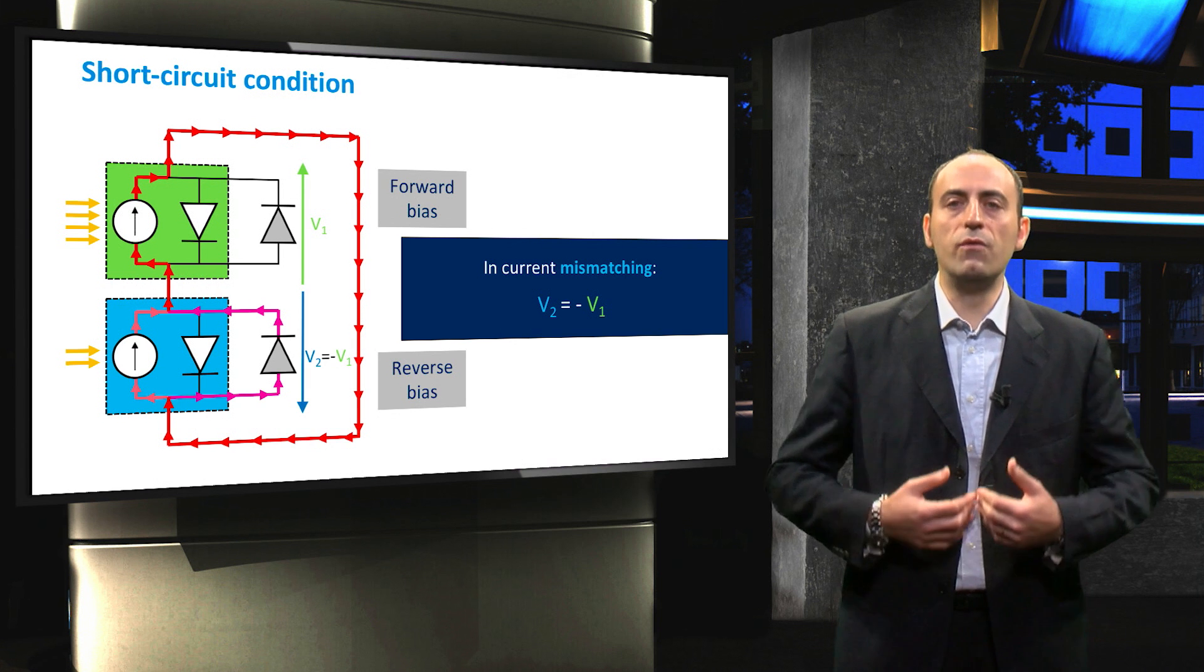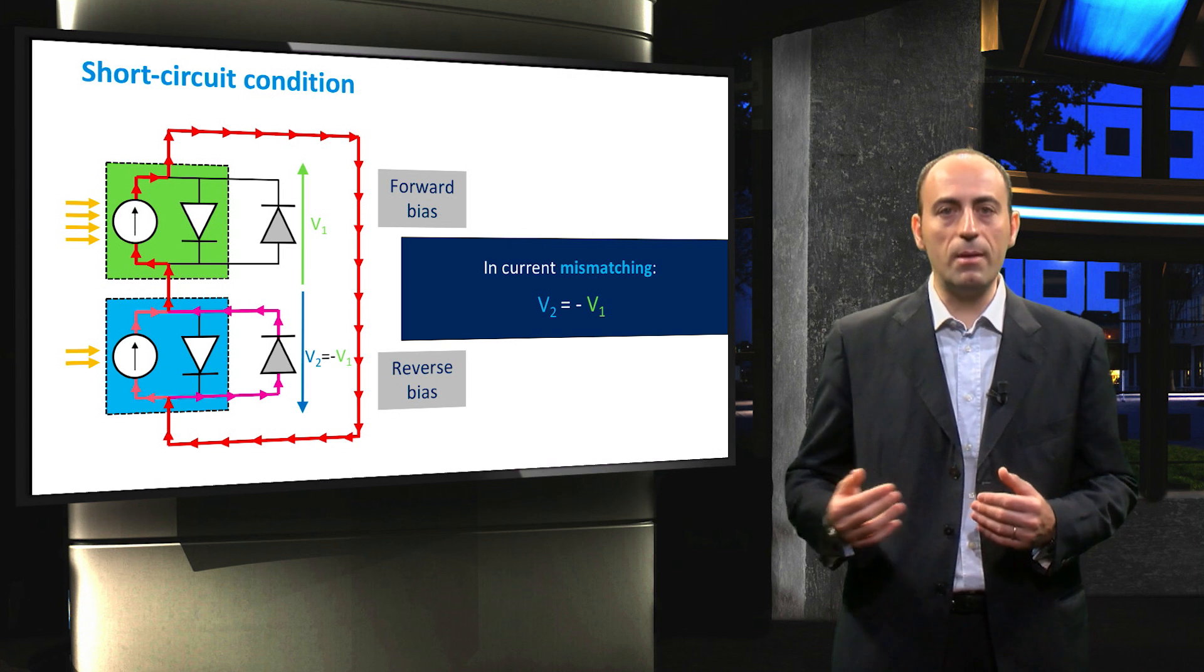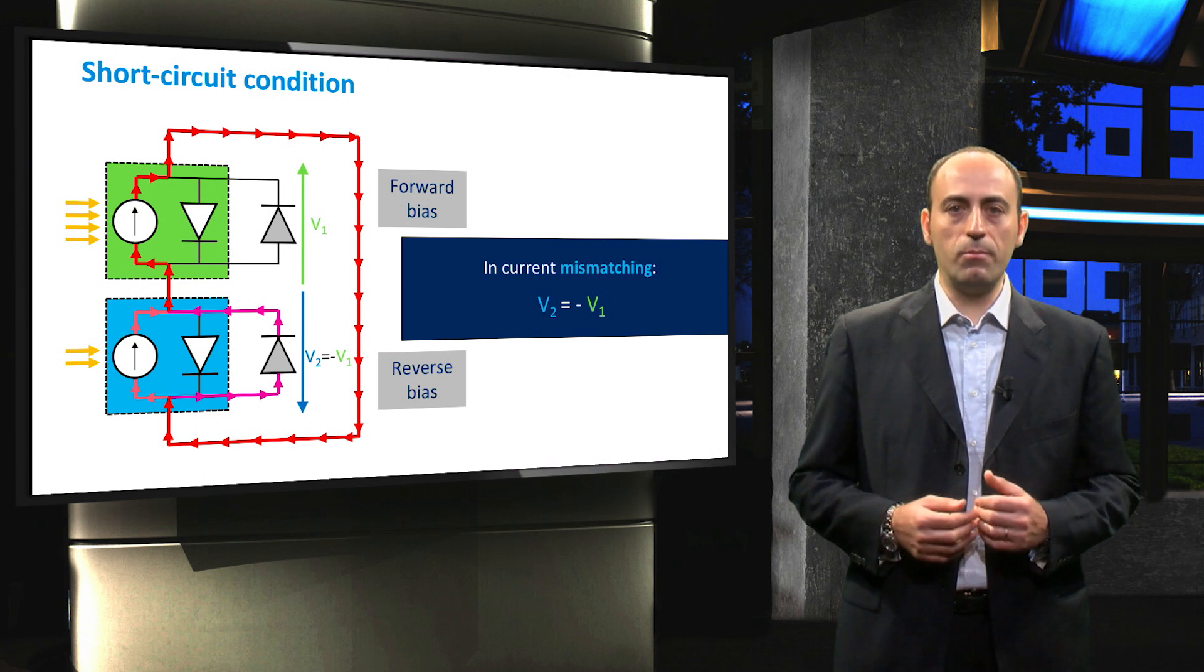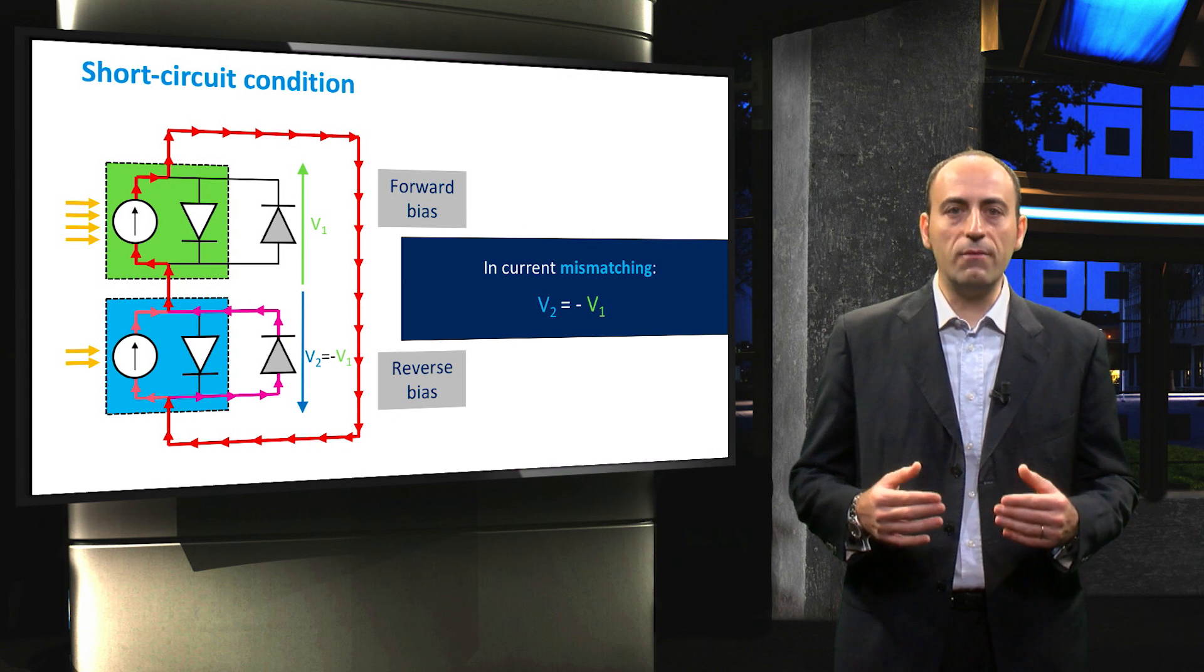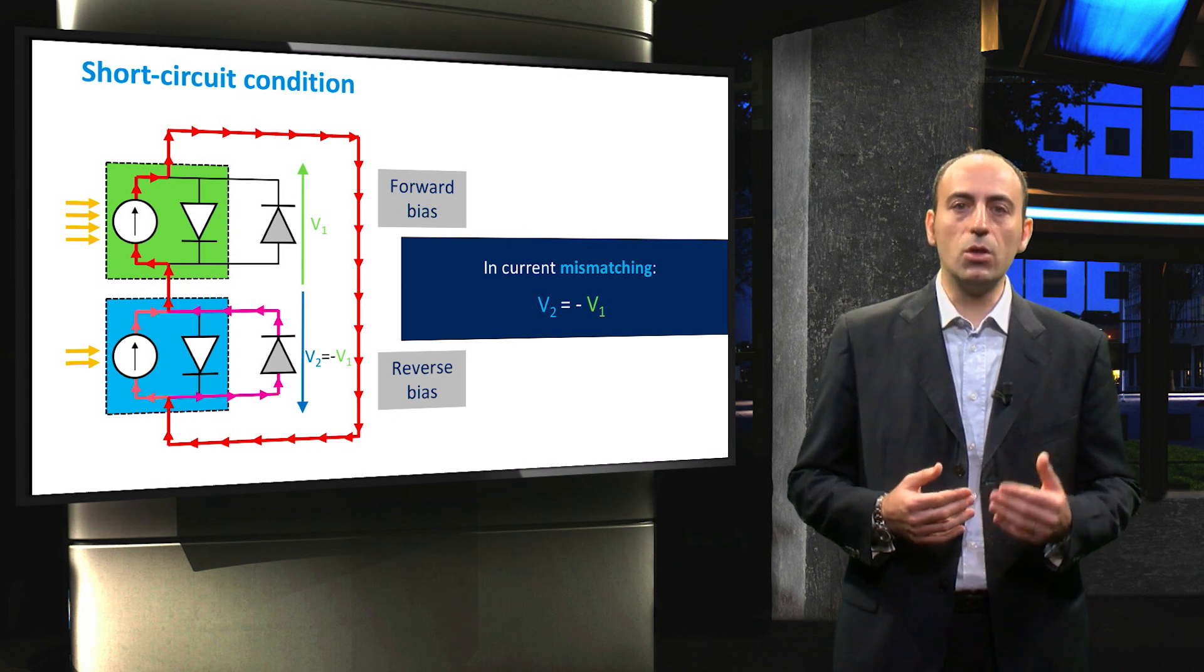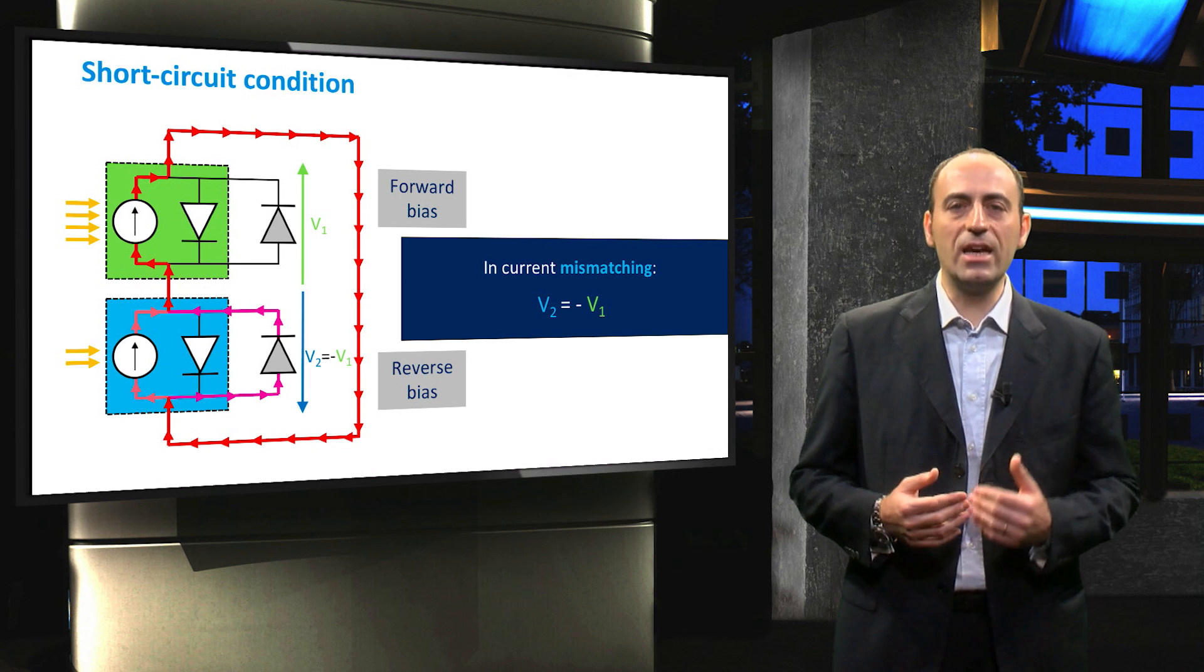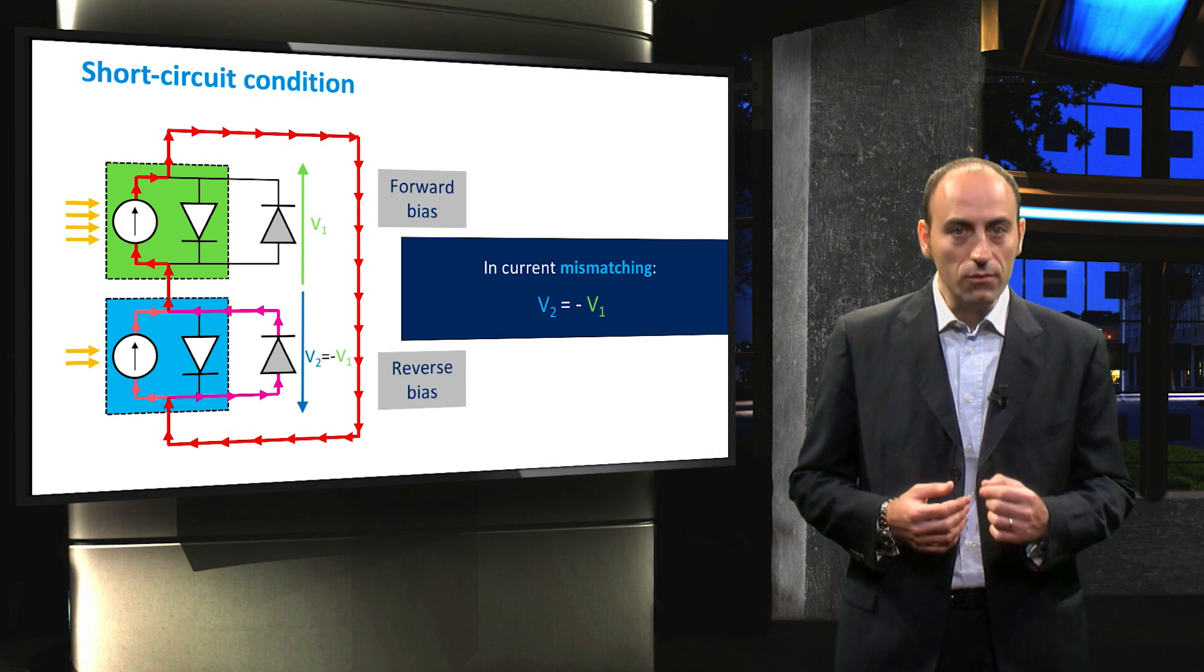Indeed, the current that was supposed to flow through the shaded cell would instead activate as soon as possible the bypass diode that is mounted counter polarized with respect to the cell. This means that when we have two cells in series that are short circuited, then the cell receiving lower irradiance would see a negative bias which would activate the bypass diode that is mounted counter polarized.